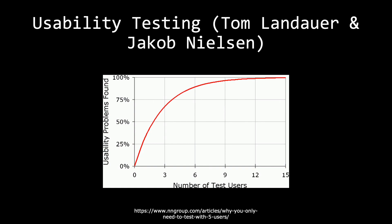Looking at this graph, you can see how many users you need to test with in order to improve your game. Tom Lauder and Jacob Nelson concluded that one user increases insight into problems with your project by 33 percent. If you test against five users, they will give you 80 percent of insight into problem areas. Anything more than five doesn't add much, though more is always welcome. Most importantly, zero users gives you zero percent insight — so it is always better to test with one user versus none.